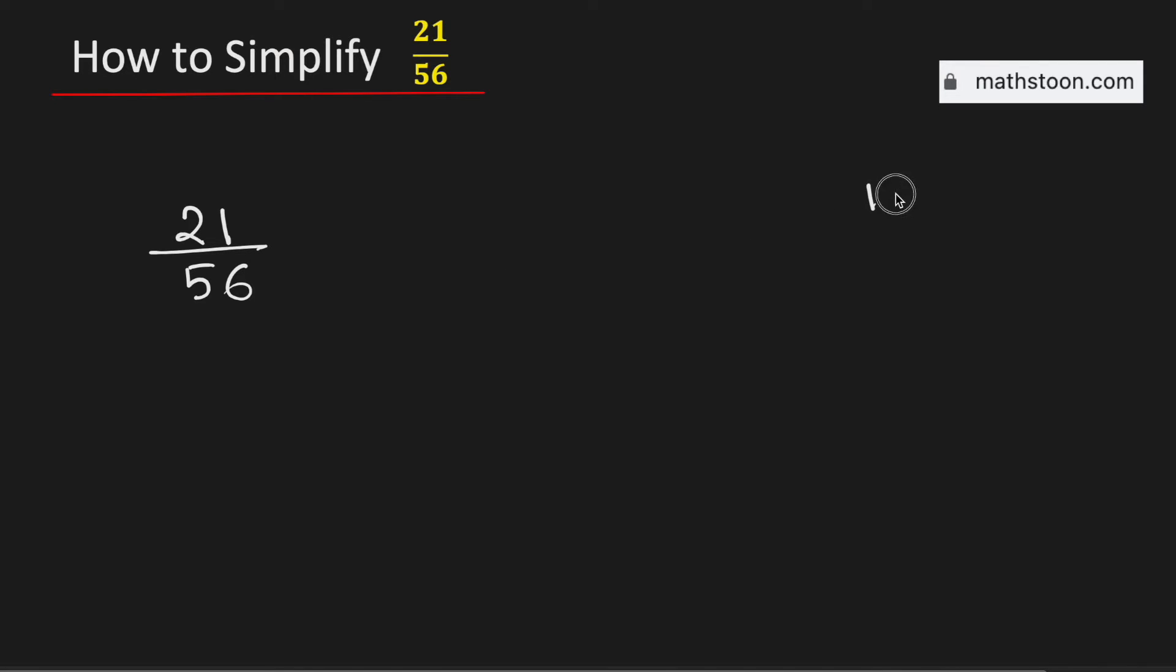We know that 21 can be written as 1 times 21 and 3 times 7. And the number 56 can be written as follows.